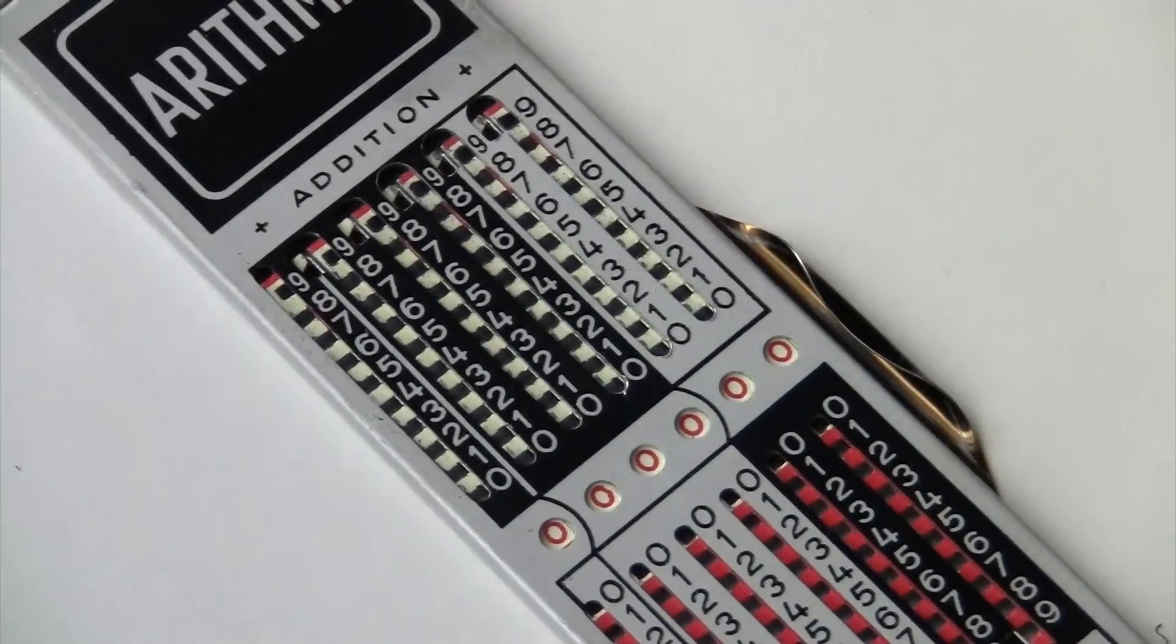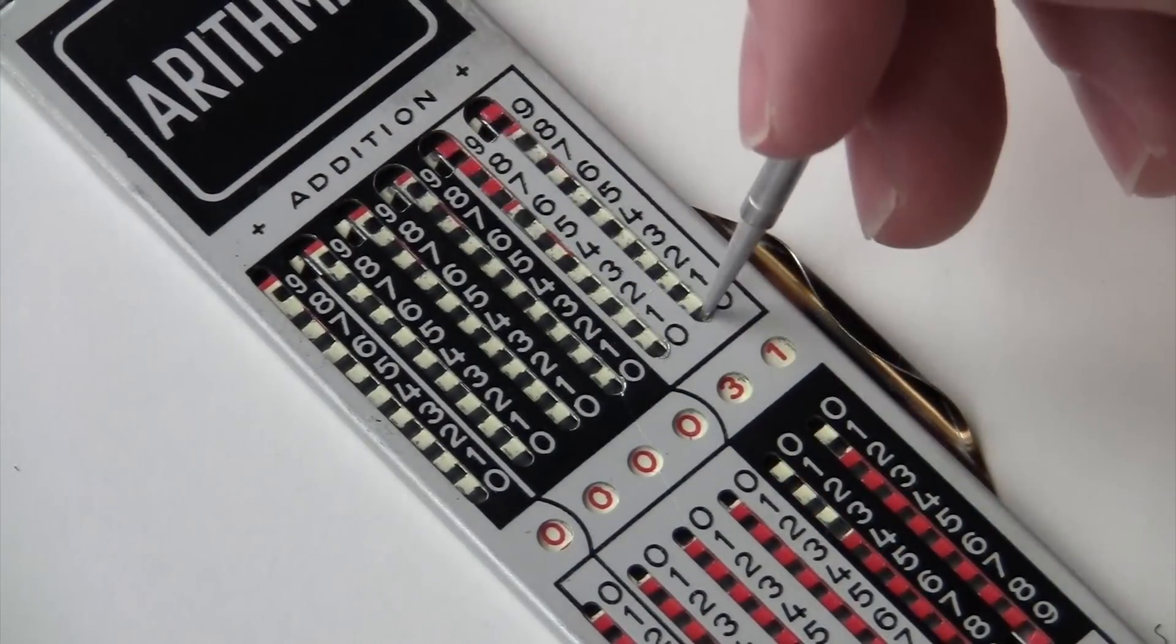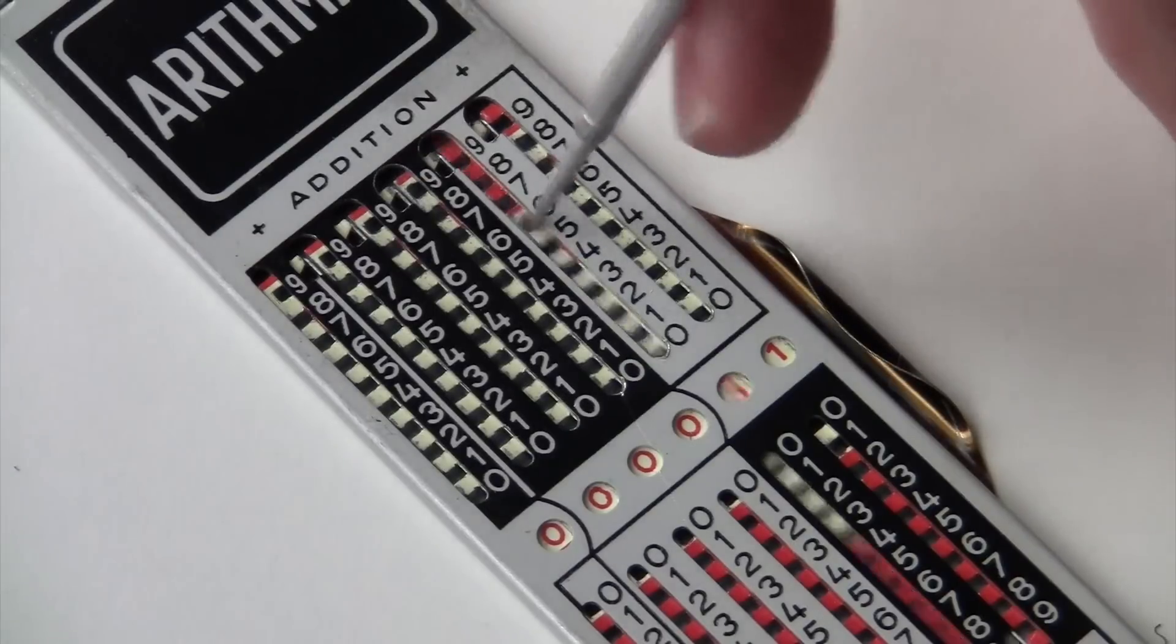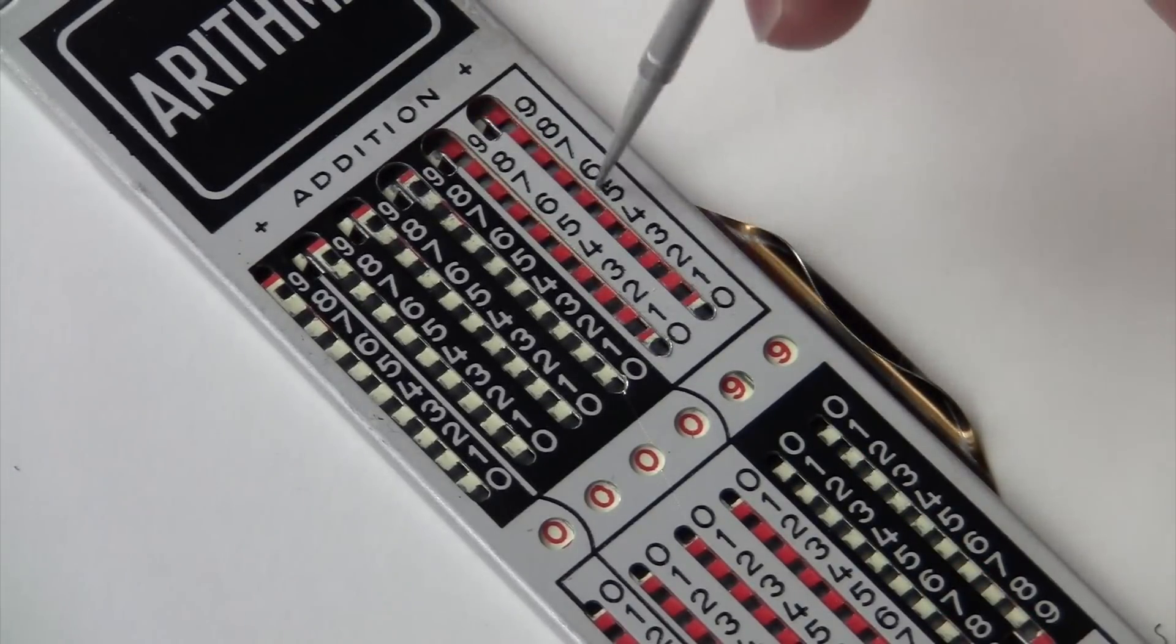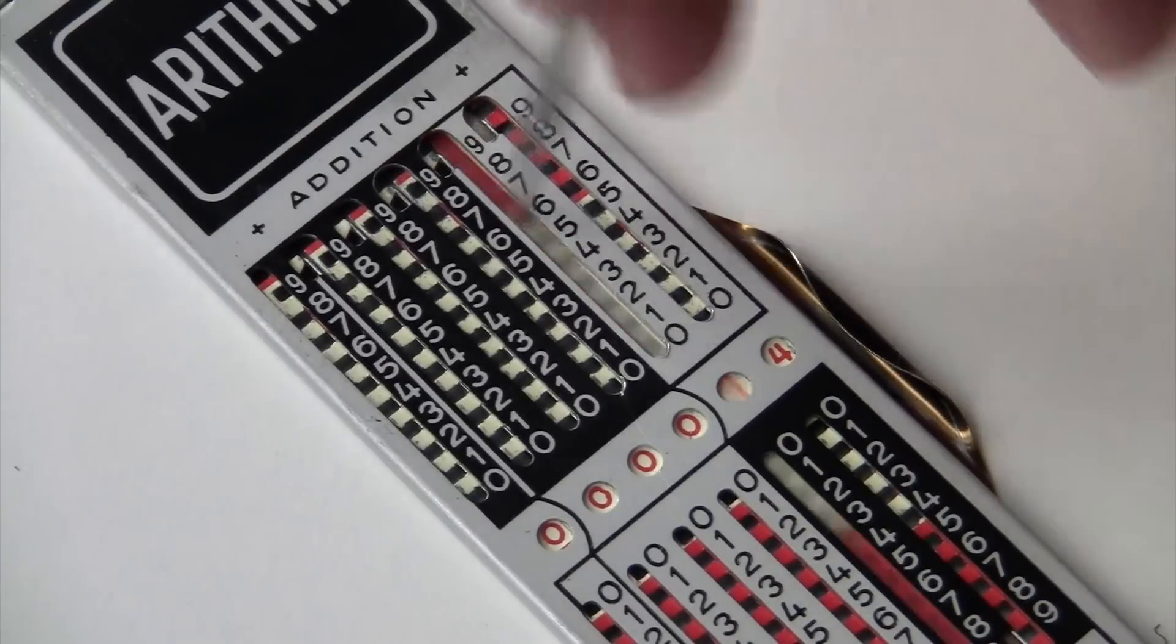This is annoying when it happens in the middle of a computation. You kind of have to stop what you're doing and clear the arrows before continuing. Like here I'm doing 31 plus 68 plus 5 plus 98.